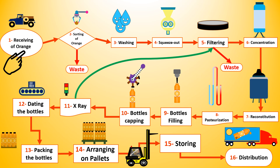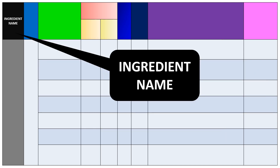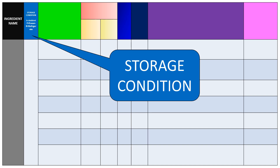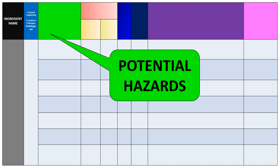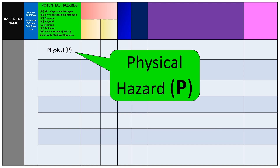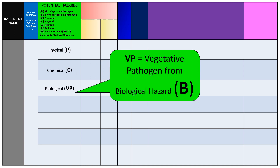We have three main ingredients and raw materials: the orange itself, water in the reconstitution phase, and air. You will need to draw a table with me — 9 columns multiplied by 8 rows — for the raw materials risk assessment. The first cell will contain the ingredient name, then the storage condition (ambient temperature, refrigerated, or frozen), then the potential hazard: physical, chemical, or biological.